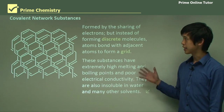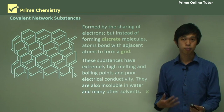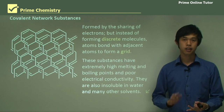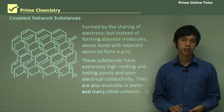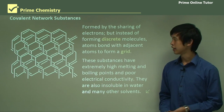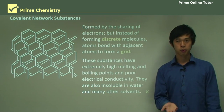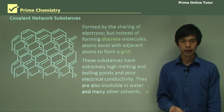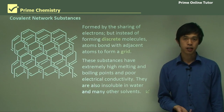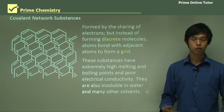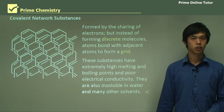That concludes the lesson on a comparison of the different bonding types. We looked at metallic, covalent molecular, ionic, and covalent network substances, their properties, and why those properties occur. We'll now move on to the question segment, and hopefully you'll be able to utilize this knowledge to answer some questions.